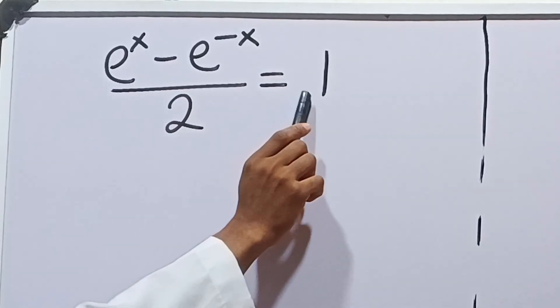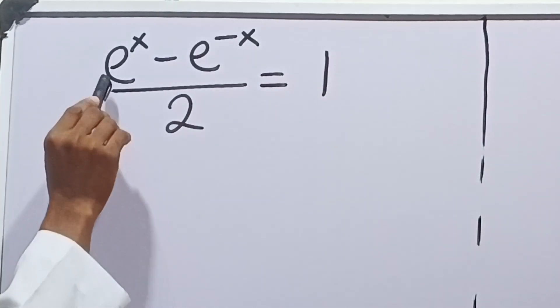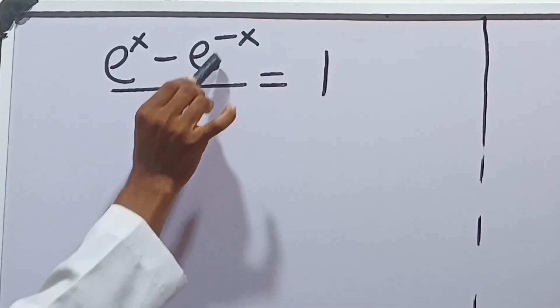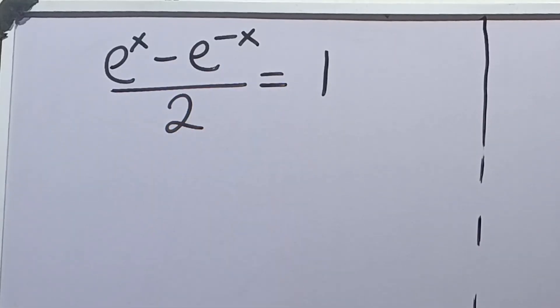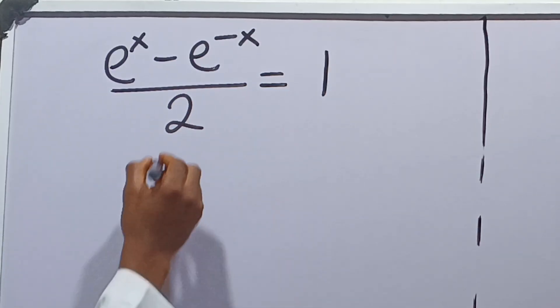Let's solve this question together. It says e raised to the power x minus e raised to the power minus x, all over 2, is equal to 1. We have to solve for the value of x.